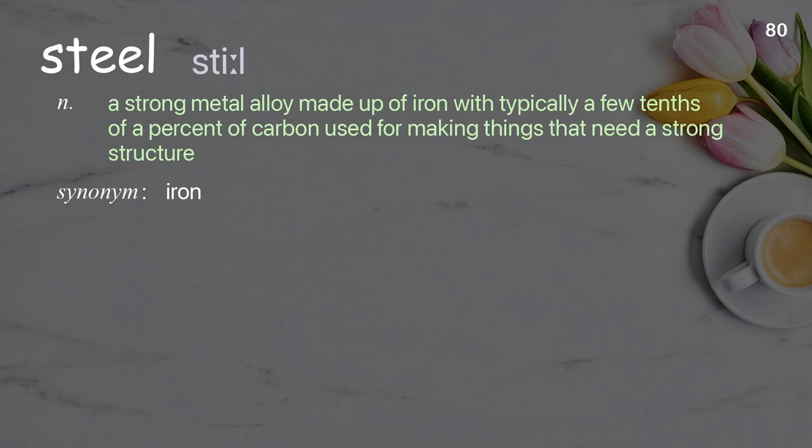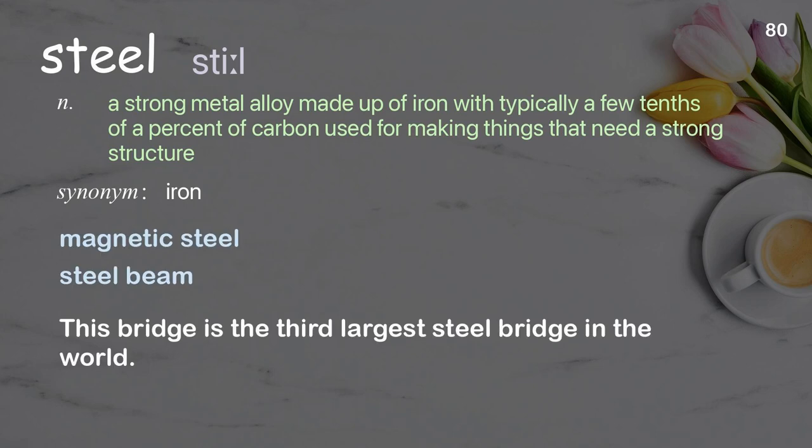Steel: a strong metal alloy made up of iron with typically a few tenths of a percent of carbon, used for making things that need a strong structure. Examples: magnetic steel, steel beam. This bridge is the third-largest steel bridge in the world.